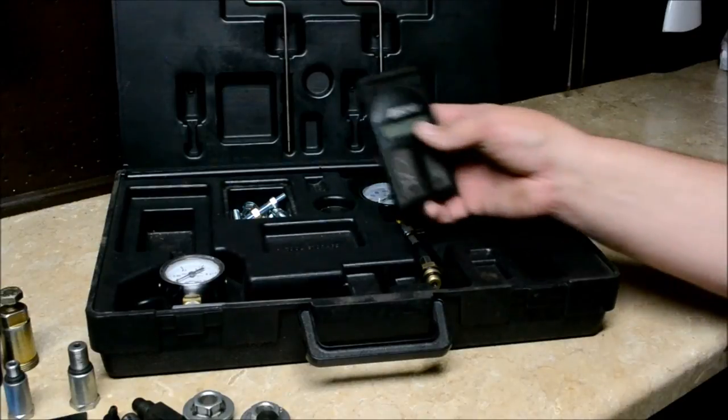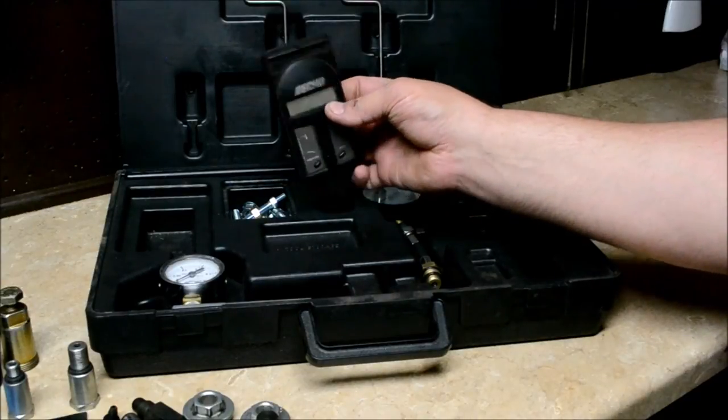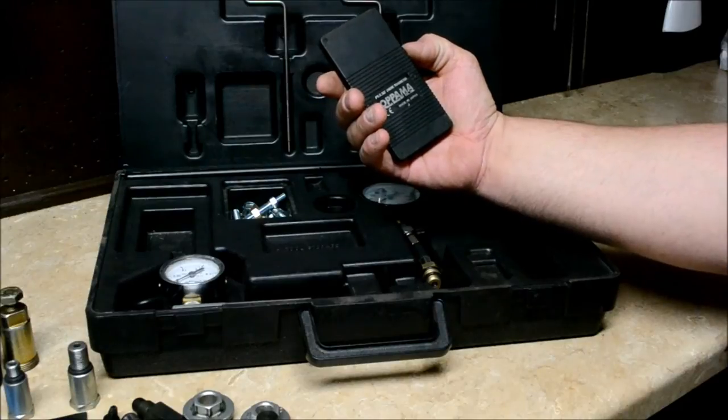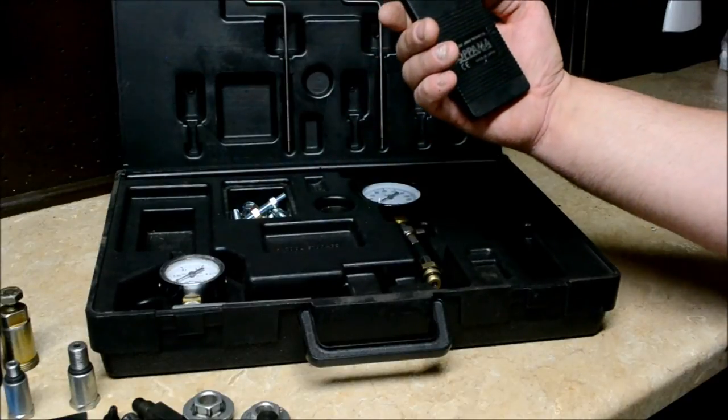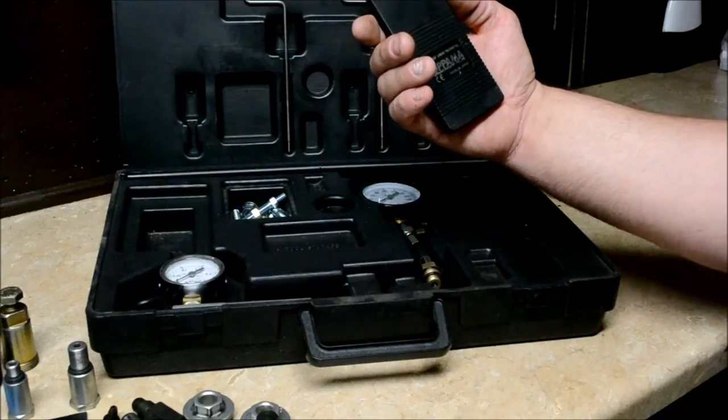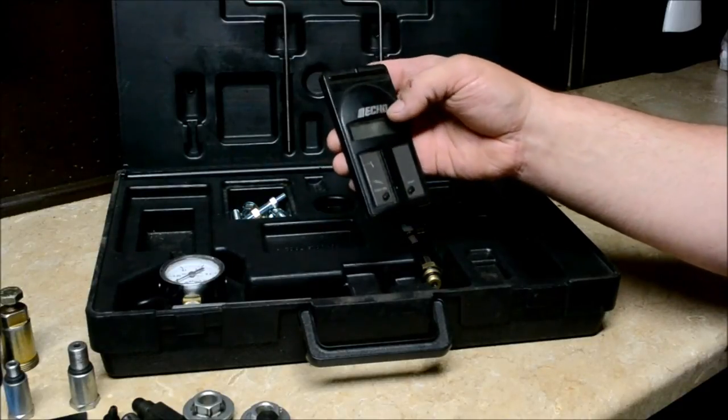It comes with an Echo tachometer. There's a part number on it - I think you can get it separately but I don't know what the part number is. It's not on there. This is like a PET 1000 or something like that.